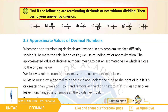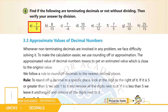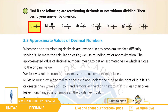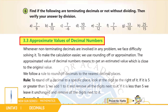Question number 6: Find whether the following are terminating decimals or not without dividing, then verify your answer by division. (a) 7/9 — اگر ہم 7 کو 9 پر divide کریں تو point کے بعد 7 بار بار آئے گا اور remainder 0 نہیں ہوگا، جو اس بات کا ثبوت ہے کہ 7/9 non-terminating decimal ہے۔ اگلے parts آپ نے خود حل کرنے ہیں۔